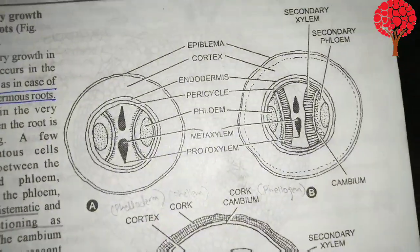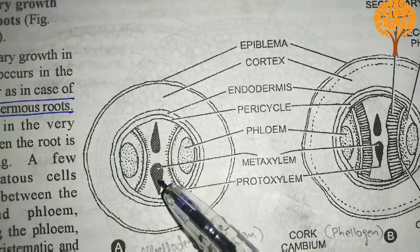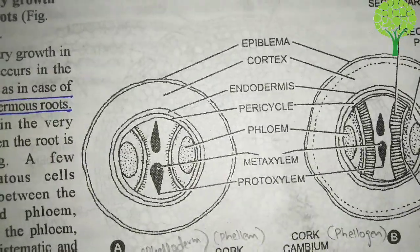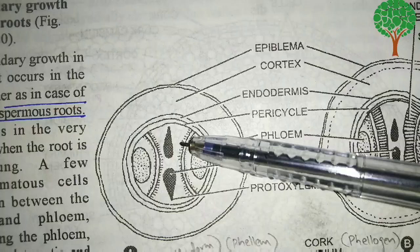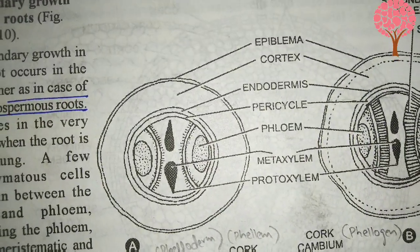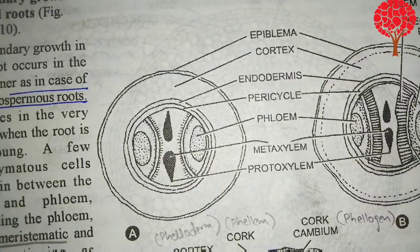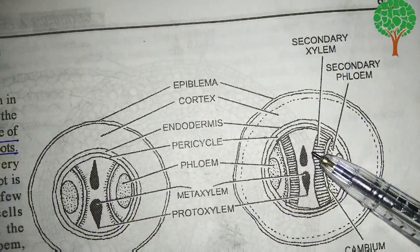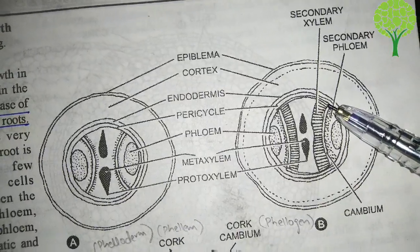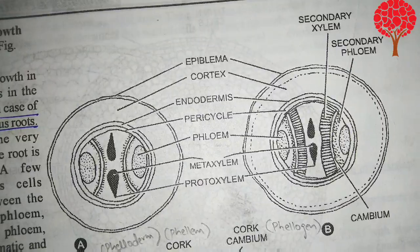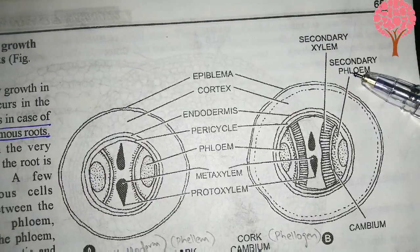Here we can observe the secondary growth. Basically, the parenchymatous tissue between the xylem and phloem bundles — one layer becomes meristematic, de-differentiates, and starts behaving as cambium. This layer starts behaving as cambium surrounding the phloem. The function of cambium is to produce secondary xylem towards the pith and secondary phloem towards the periphery. Along with the formation of secondary xylem and secondary phloem, the cambium also cuts broad parenchymatous rays.